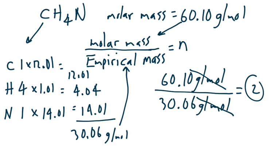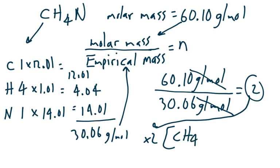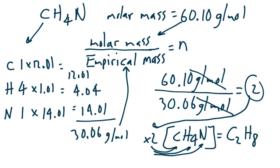Now that we have a ratio of 2, the last step is to distribute that ratio to the empirical formula CH4N through multiplication: 2 times 1 gives two carbons, 2 times 4 gives eight hydrogens, and 2 times 1 gives two nitrogens. The molecular formula is C2H8N2. You can check this because the molar mass of C2H8N2 comes out to about 60.12, which confirms it's the answer.